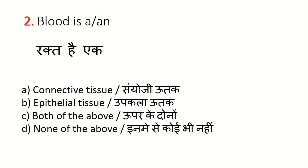The correct answer is Option A: Connective Tissue. The four basic types of tissues in animals are connective tissue, epithelial tissue, muscle tissue, and nervous tissue. Blood is classified as connective tissue.